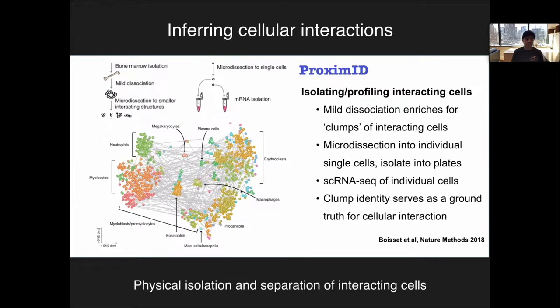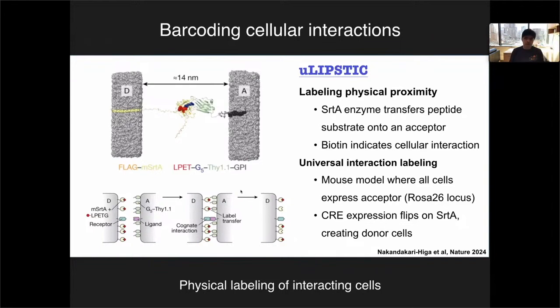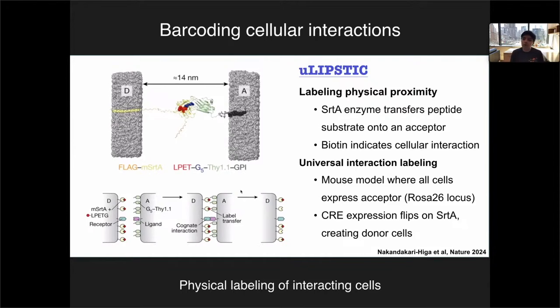We again need a middle ground — experimental ground truth but also highly scalable. This year the idea came from Gabriel Victoria's lab at Rockefeller: a method called Lipstick. It uses an enzyme from bacteria called SRTA, loaded with a peptide that it can physically transfer to an acceptor protein if it comes close enough. Suppose a T cell expresses this SRTA enzyme — that's the donor — and a dendritic cell expresses the acceptor. If and only if these cells come into close contact, less than 14 nanometers, then the peptide will be transferred. The dendritic cell now carries a permanent mark that it has previously interacted with a T cell — a ground truth stamp.